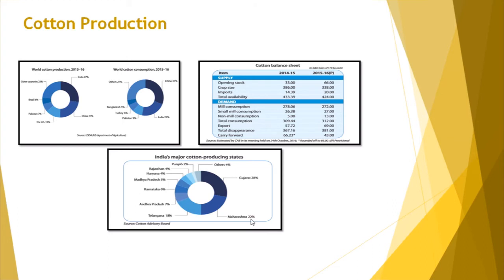India's major cotton producing states are Gujarat at 28%, Maharashtra at 22%, Telangana at 18%, Andhra Pradesh at 7%, Karnataka at 6%, Madhya Pradesh at 5%, Haryana at 4%, Rajasthan at 4%, and Punjab at 2%. On world consumption in 2015-16, India and China have the highest consumption — China around 31% and India around 22% of the entire world.